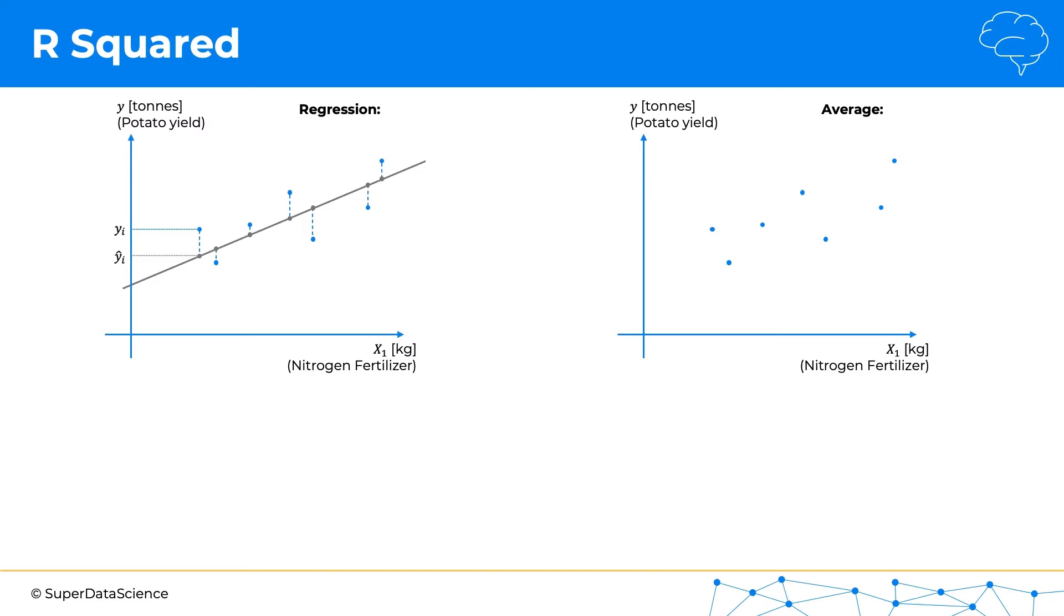Now, as we discussed before, the way we built this line is we're minimizing this sum over here, and that is the ordinary least squares method. Well, actually, this sum has a name—it's called the residual sum of squares, and it's indicated by this abbreviation.